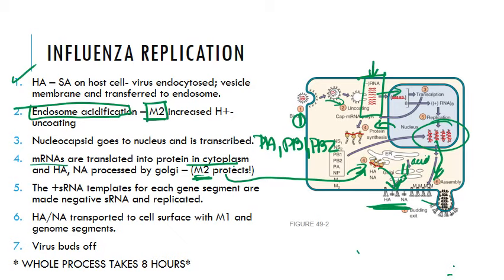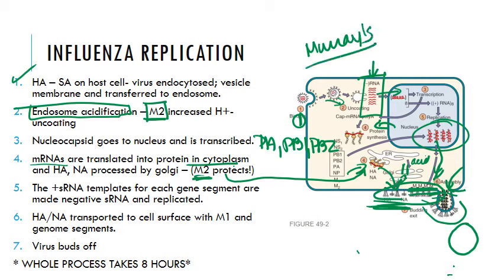The virus selectively buds from the apical surface — you've got your M1 matrix protein, M2 preventing acidification, HA and NA, and the genome segments forming a bud. Neuraminidase then cleaves so the virus can bud off. This whole process is pretty complicated and takes about eight hours. If you need further clarification, go to Murray's textbook chapter on influenza.